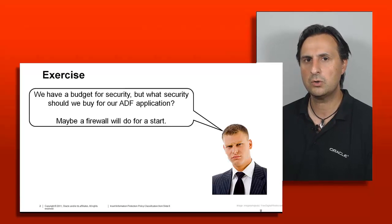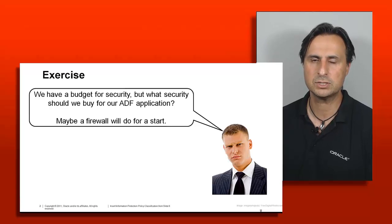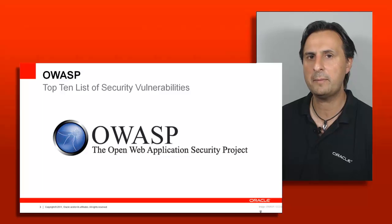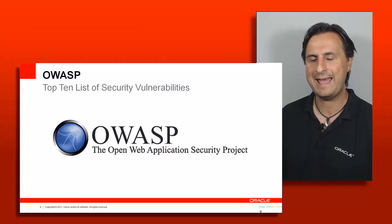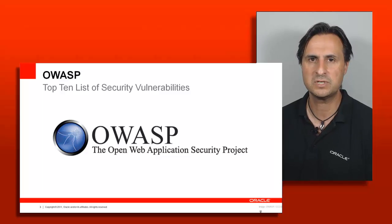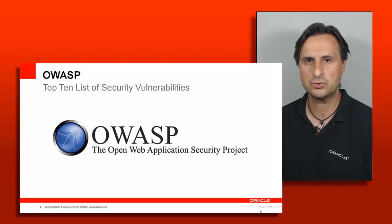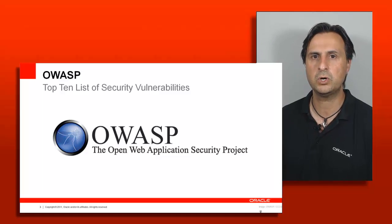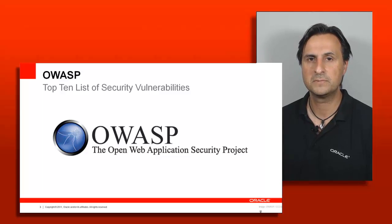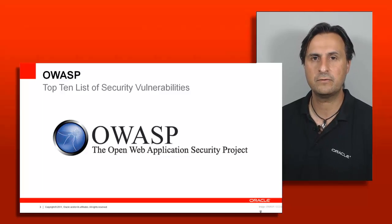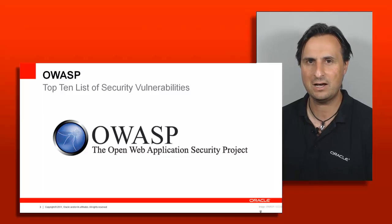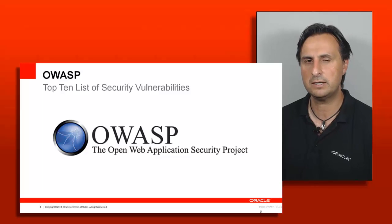So how do we get more guidance on what we need to think about when we build applications? There is an organization called the Open Web Application Security Project, or OWASP. I recommend you search for OWASP and visit their website. They provide a wealth of documentation and tooling to harden application development and make it more secure. This group publishes a top 10 list of vulnerabilities, typically once a year. This top 10 list doesn't mean there are only 10 items to look for — there are probably hundreds — but it's a good start.